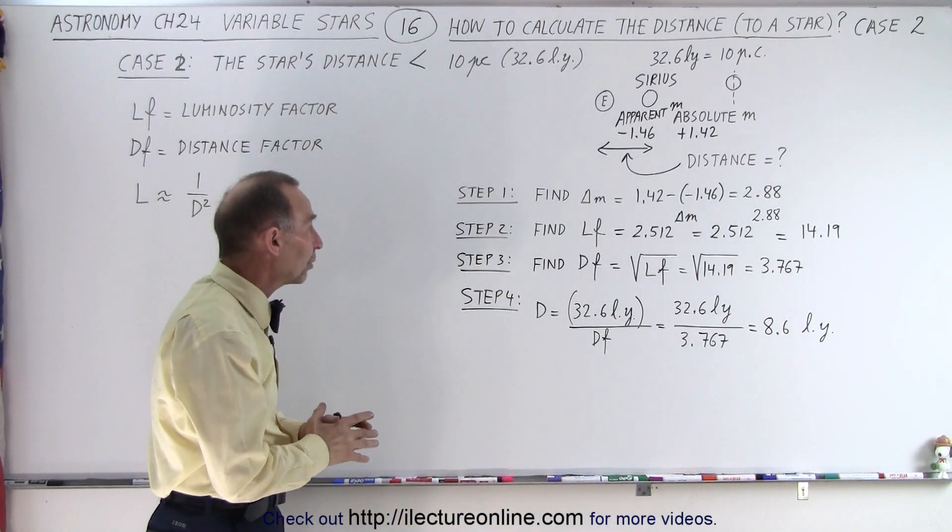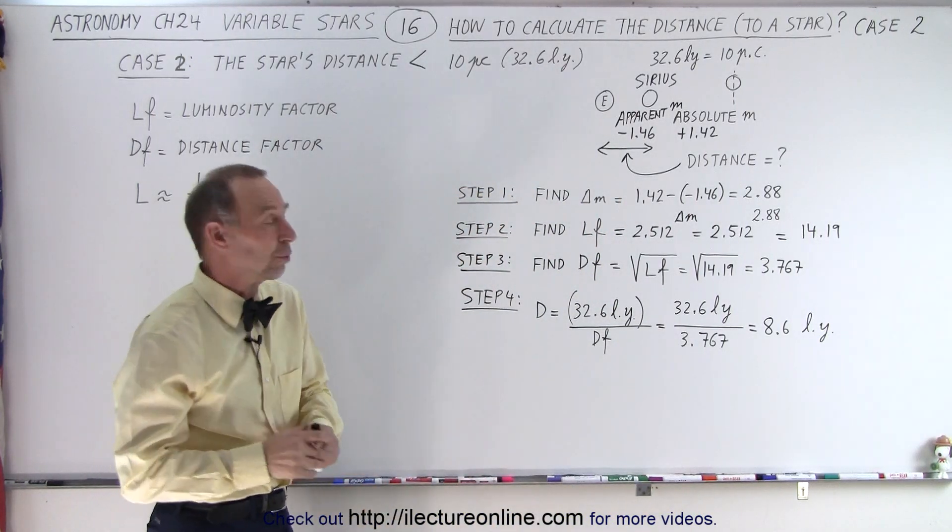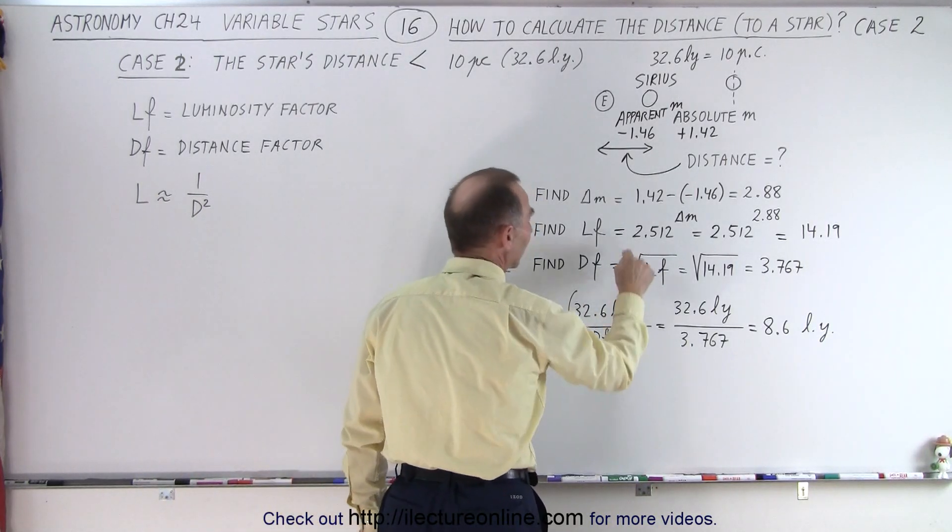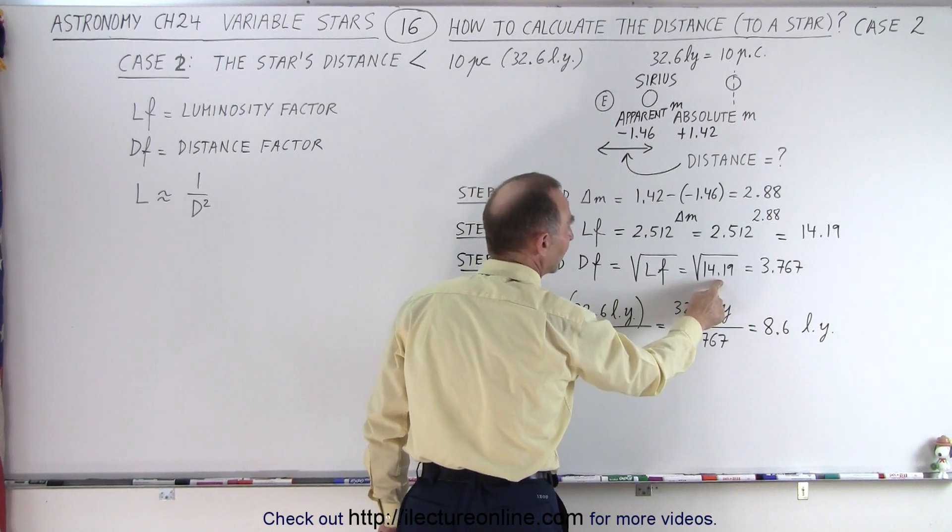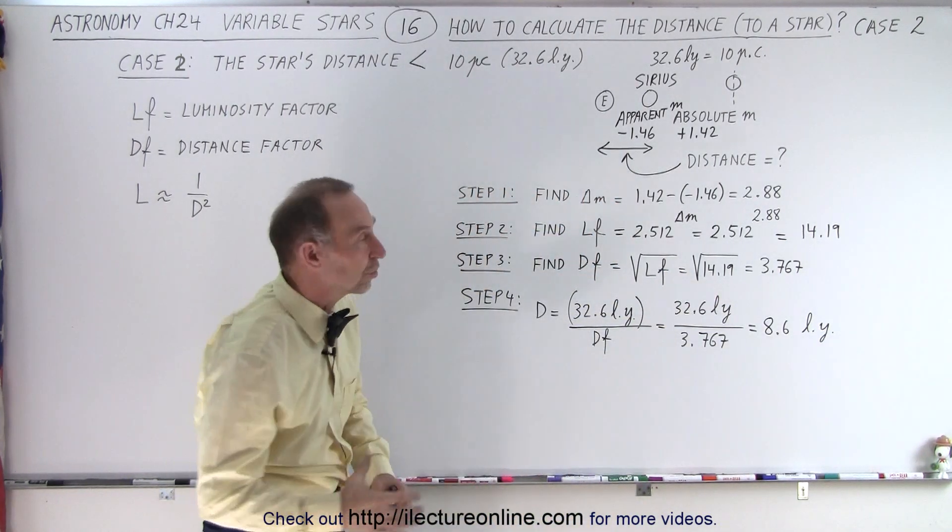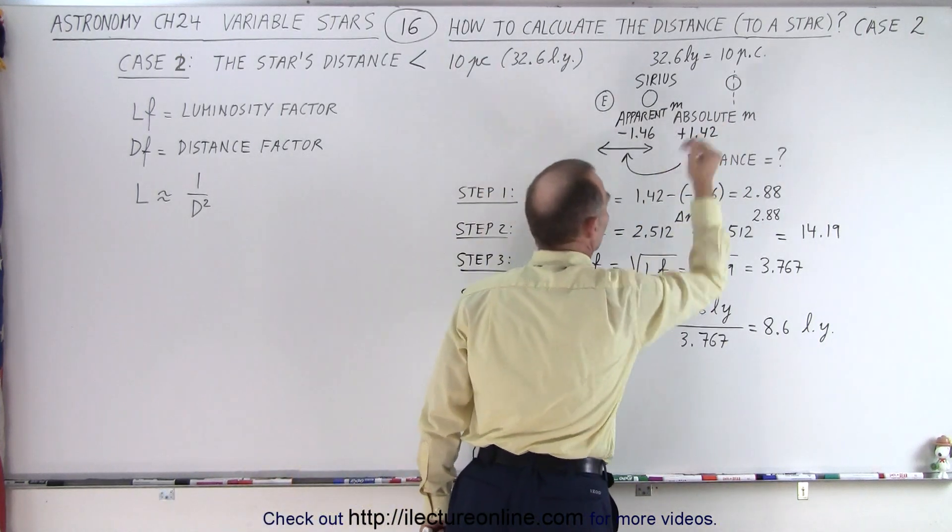Then we take that luminosity factor and we take the square root to get the distance factor. So DF stands for distance factor. Notice we take the square root of 14.19, so it's 3.767 times closer than it would be if it was 10 parsecs away.